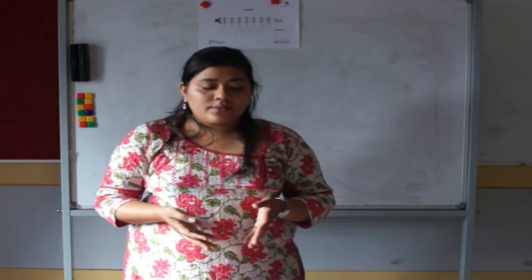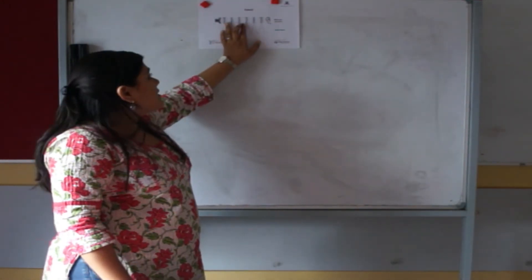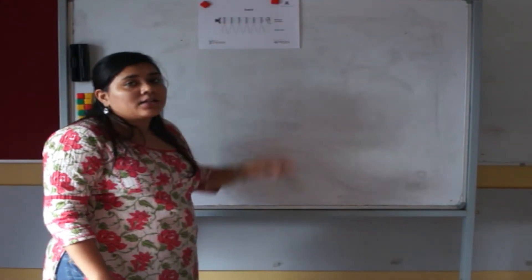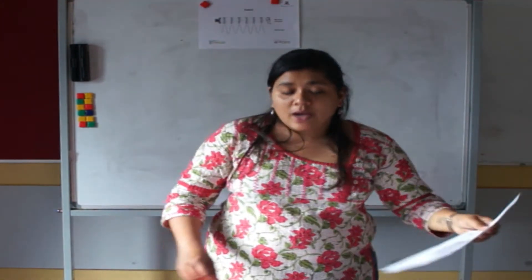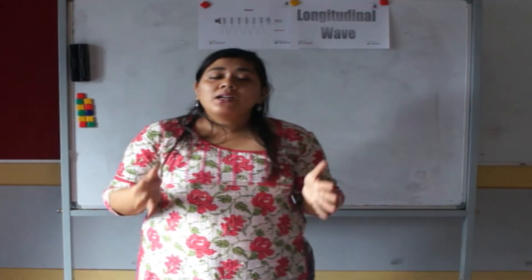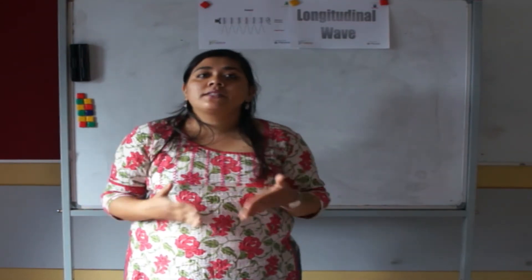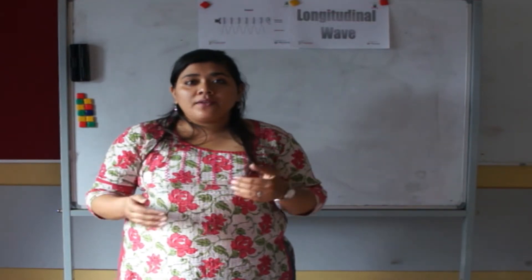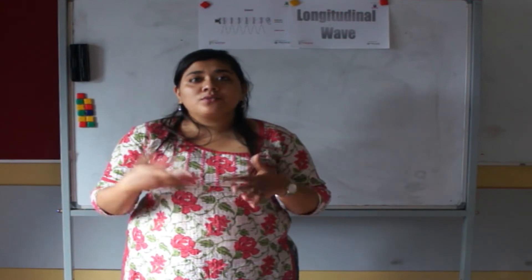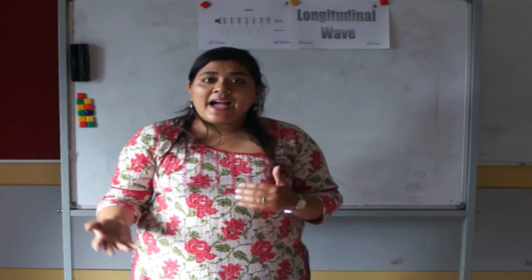If you have a small class, make three groups instead of five. Once children stand in the form of a wave, ask them to position themselves as particles — some will come together and some will stay further apart. Once all groups have settled, tell them they have formed a longitudinal wave. The part where particles come together is called a compression; ask those children to raise their hands. The part where children are further apart is called a rarefaction; ask those children to raise their hands. Both concepts of compression and rarefaction are now known to the children.